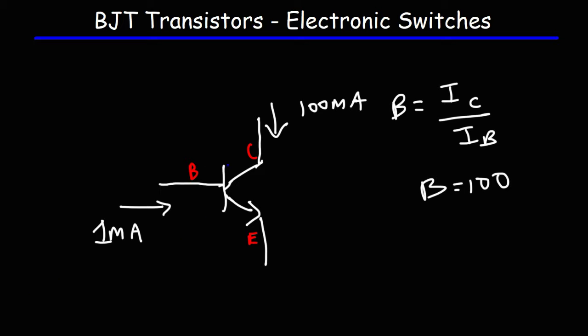When a small current is applied to the base of the transistor, a larger current can flow from the collector to the emitter. So you could use a small current to activate a circuit with a larger current. The emitter current is the sum of the base current and the collector current, so it's 1 plus 100 — it's going to be 101 milliamps.